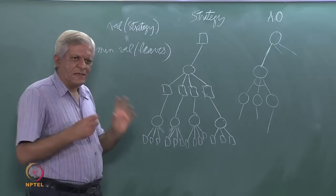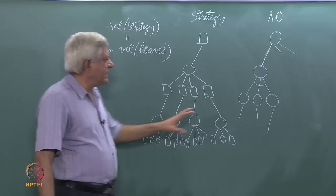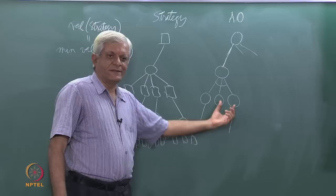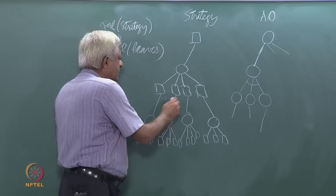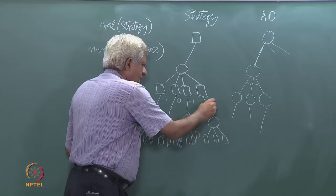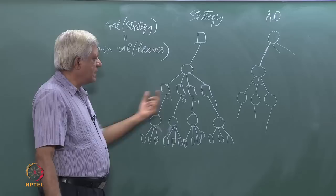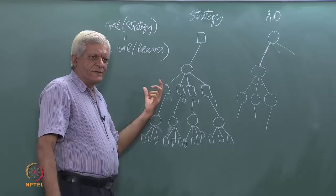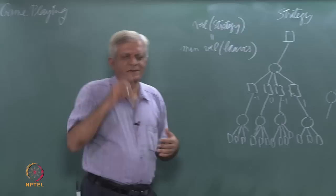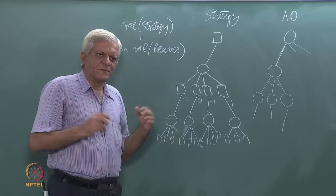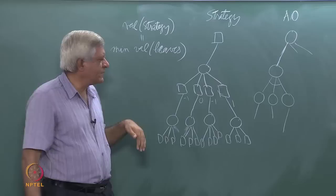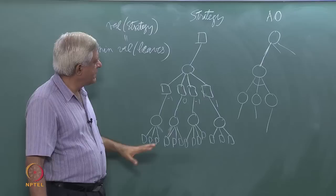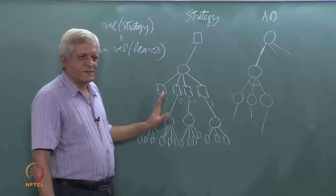A max node is like an OR choice, because max can choose any one, but max has to encounter all of min's choices. So, a min node is like an AND node. The difference is that the value of the solution is, in the AND-OR case, a sum of the values of cost of the nodes. In the game tree case, it is the minimum of the cost of these nodes where it is a min node. This is also consistent with our logical notion of AND — AND always chooses a minimum. So there is clearly an analogy between AND-OR trees and game trees.